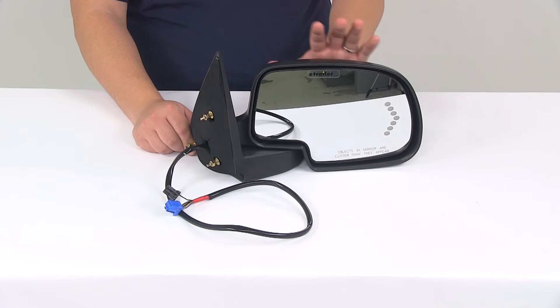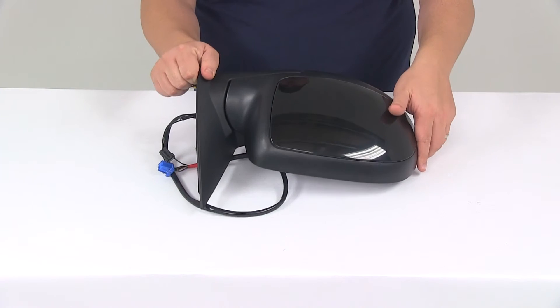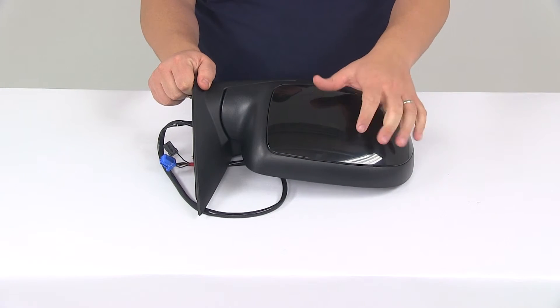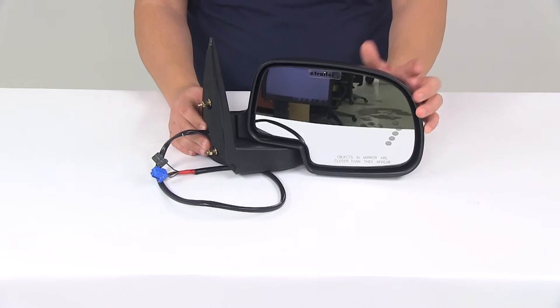This features a breakaway design, so if it's struck from the back or the front it will fold in or fold away to help deter breakage. We have a durable plastic housing construction with a black finish that can be painted to match your vehicle if desired.